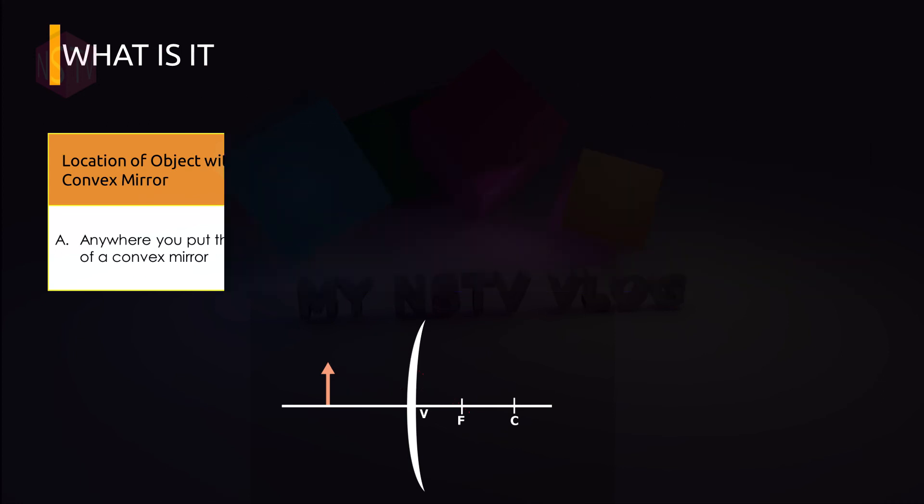To sum it up, in a plane mirror, the image location is behind the mirror, always upright or erect, same size as the object, always virtual. In concave mirror, the image description depends on object's location. So as the object moves toward the concave mirror, the size becomes larger. Often times, the image is real, but if the object is between F and V, it is virtual. When the object is at the principal focus, there will be no image formed. So in convex mirror, anywhere you put the object, the image is always behind the mirror, upright or erect, smaller, and virtual.